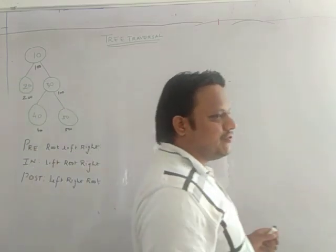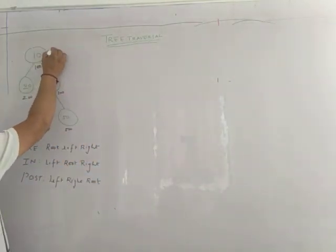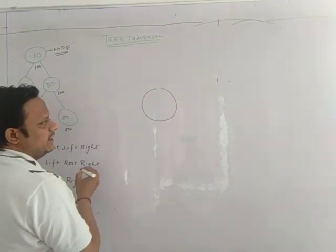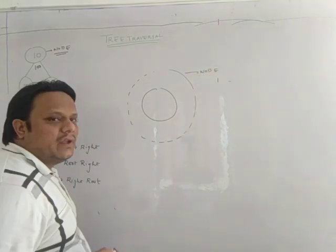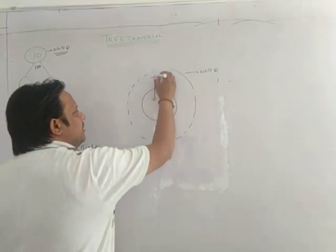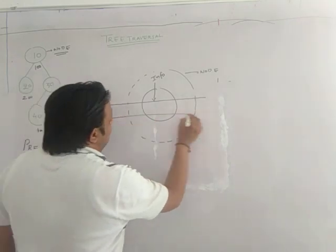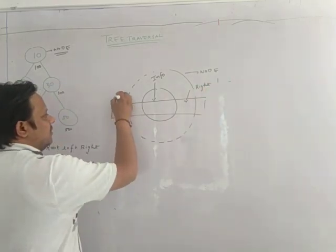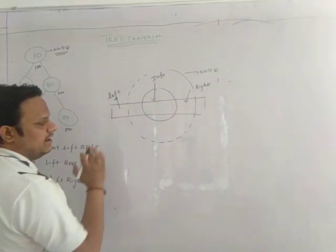First and foremost, you should know what is the structure of a tree. The name of the structure is 'node'. In a tree data structure, my node comprises three parts. The first part is the information part, which contains your data — it can be char, int, anything. Then there is a right pointer and a left pointer.